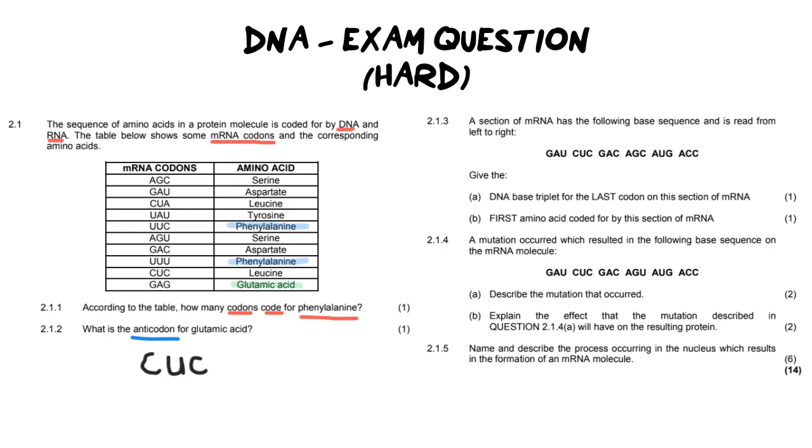Let's go over to the next question. For 2.1.3, it says a section of mRNA has the following base sequences and we are reading them left to right. The first question says give the DNA base triplet for the last codon on this section of mRNA. So that means we need to give the DNA base for this codon over here. And so the complementary base for that should be U-G-G, right?